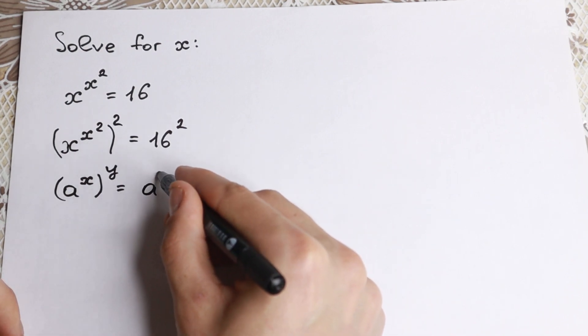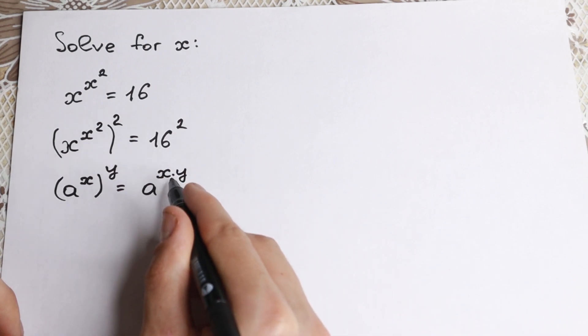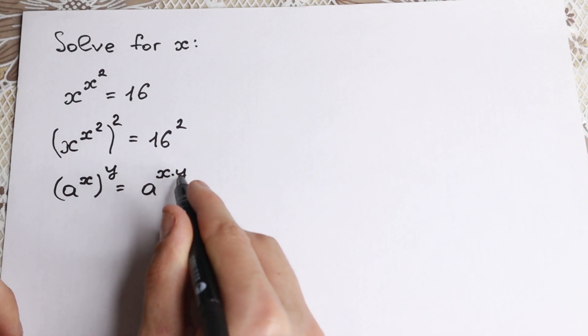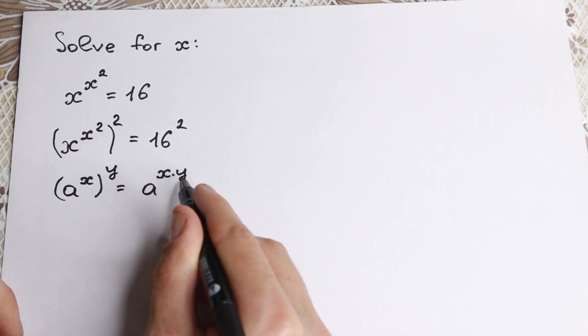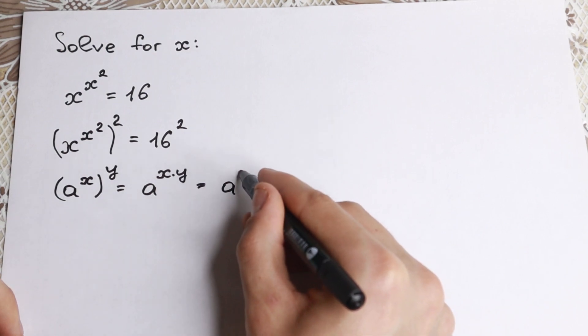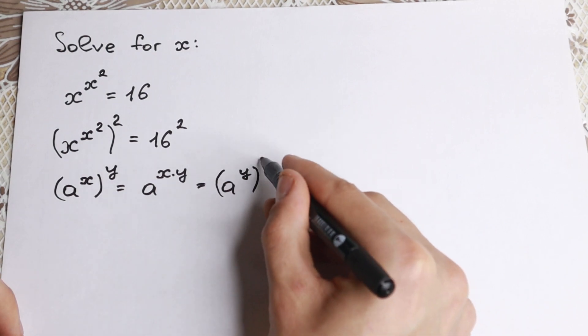But multiplying is a really good process, because right here we can easily swap these elements, and x times y is the same as y times x. So we can easily write it as a to the power y raised to the power x.